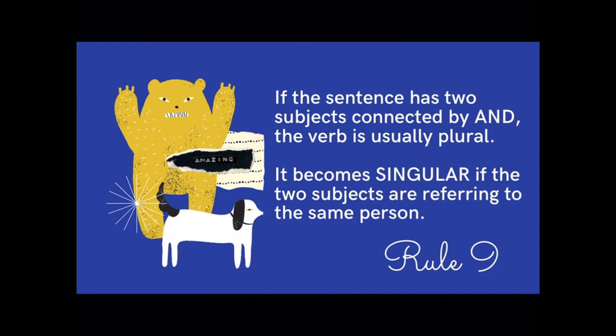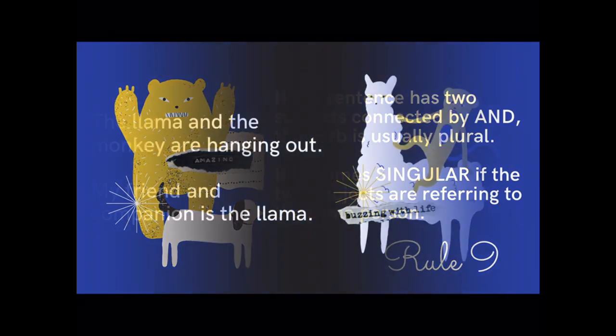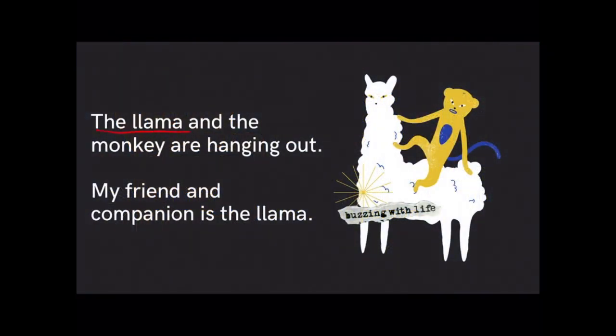If the sentence has two subjects connected by and, the verb is usually plural. It becomes singular if the two subjects are referring to the same person or thing. In the sentence, the llama and the monkey are hanging out, the verb is plural. My friend and companion is the llama. This time, the verb is singular because friend and companion are both referring to the llama. If you have questions or concerns, you may pause the video and you can go back to the first set of rules.